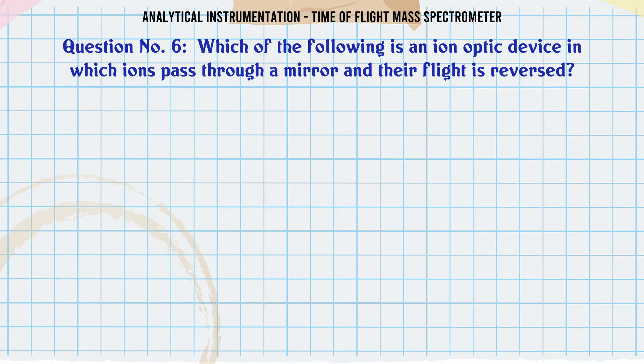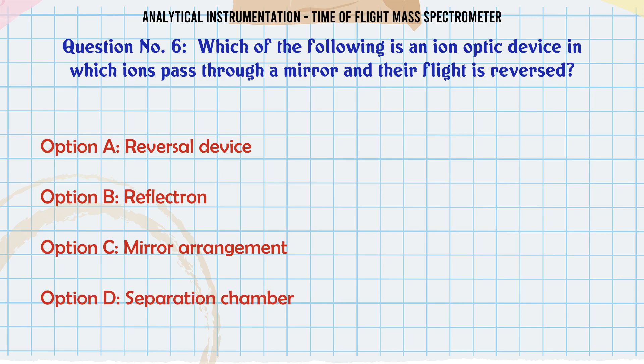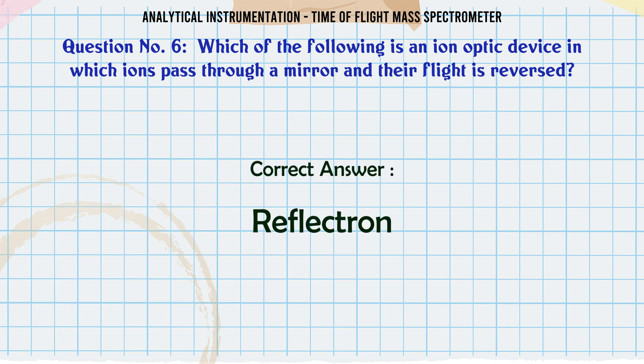Which of the following is an ion-optic device in which ions pass through a mirror and their flight is reversed? A: Reversal device. B: Reflectron. C: Mirror arrangement. D: Separation chamber. The correct answer is B: Reflectron.